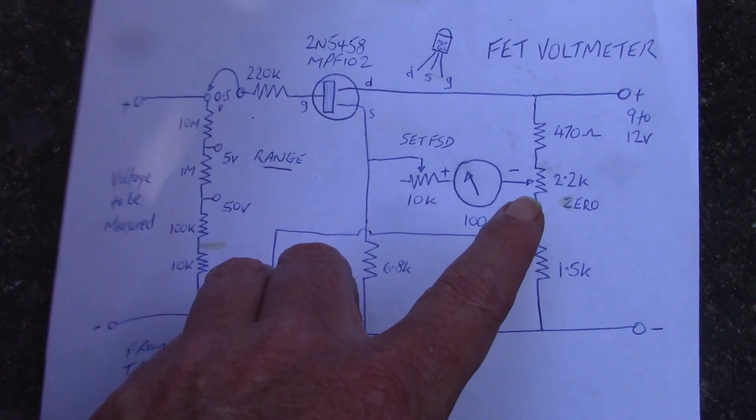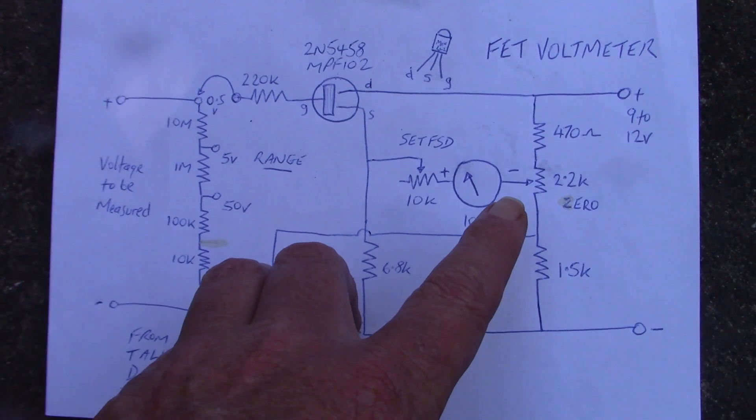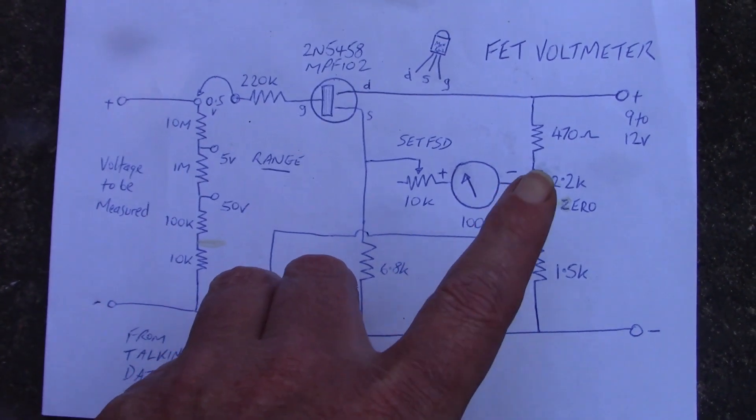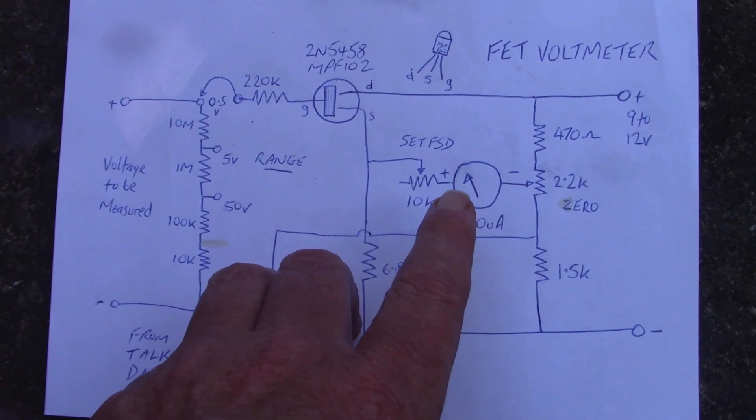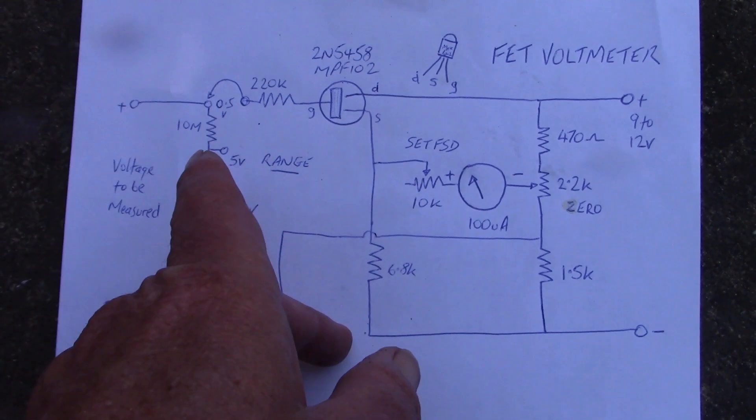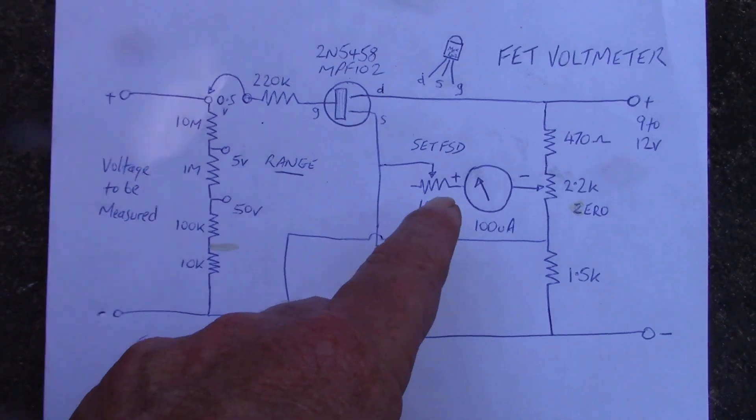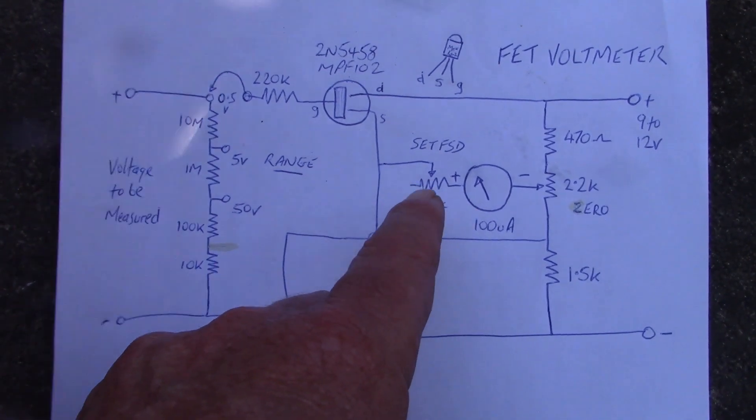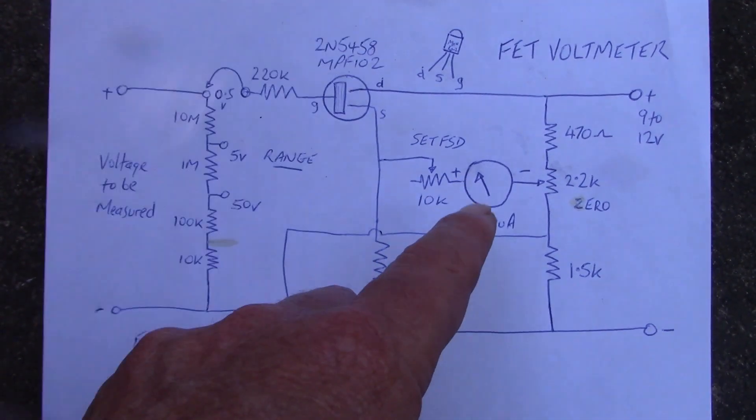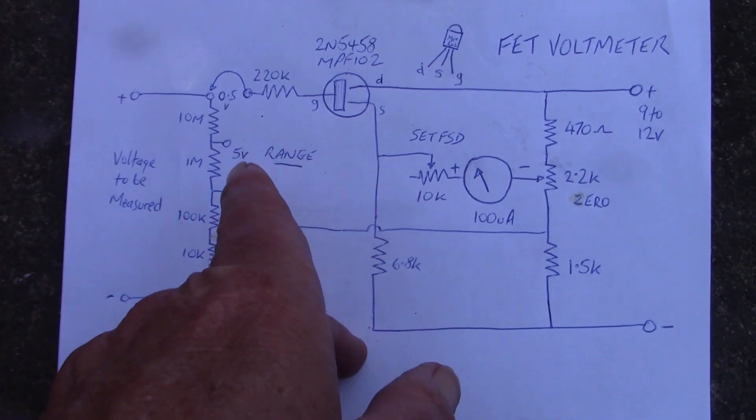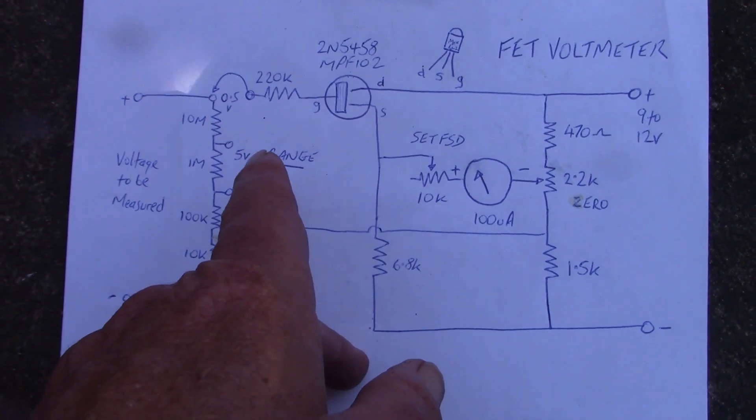This here is a trim pot where you just set it to zero. So once you've got power applied, you set this to zero. Then you apply voltage here, a known voltage, and then you use this one to calibrate it so that the meter needle is whatever your full scale is set to here.